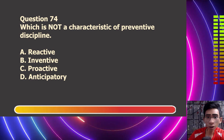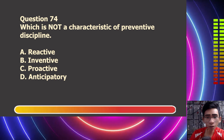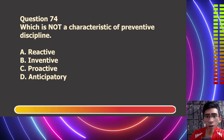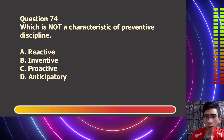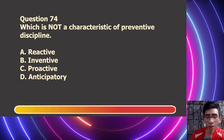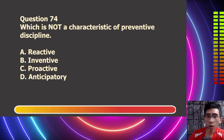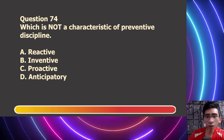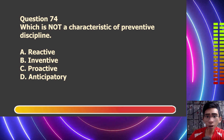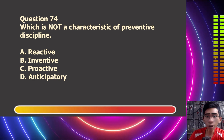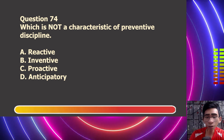Question number 74. Which is not a characteristic of preventive discipline? Letter A, reactive. Letter B, inventive. Letter C, proactive. Letter D, anticipatory.